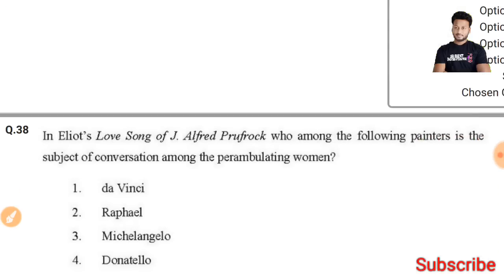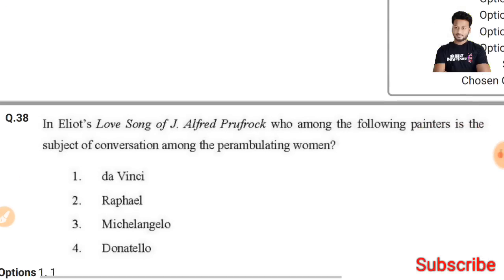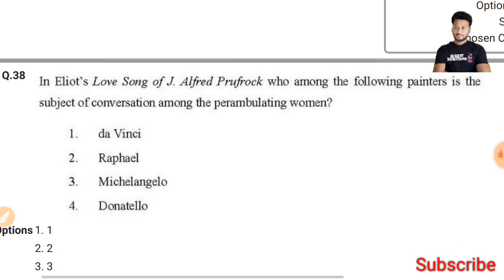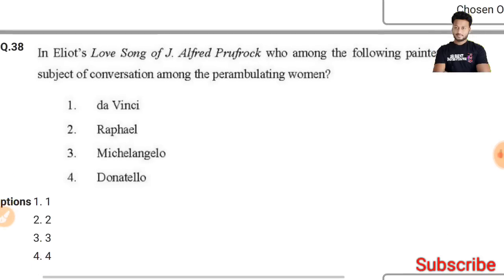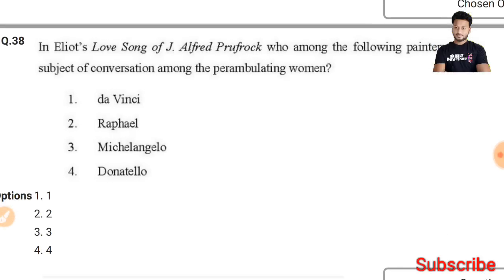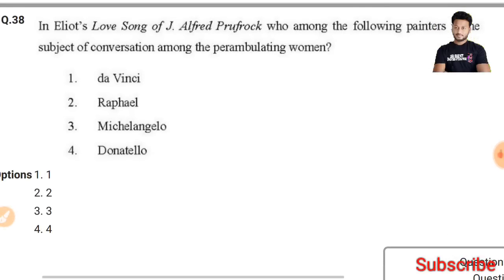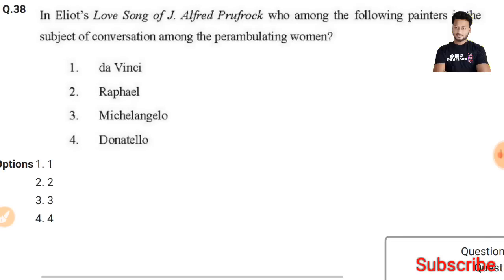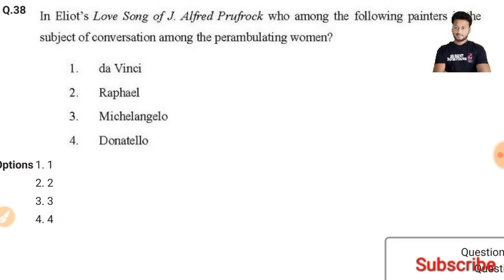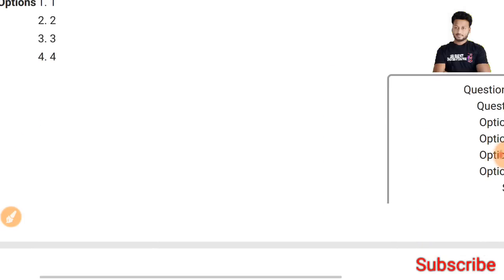Question 38: In T.S. Eliot's 'The Love Song of J. Alfred Prufrock,' which painter is the subject of conversation among the women who come and go? The answer is Michelangelo — the third option is the right answer.